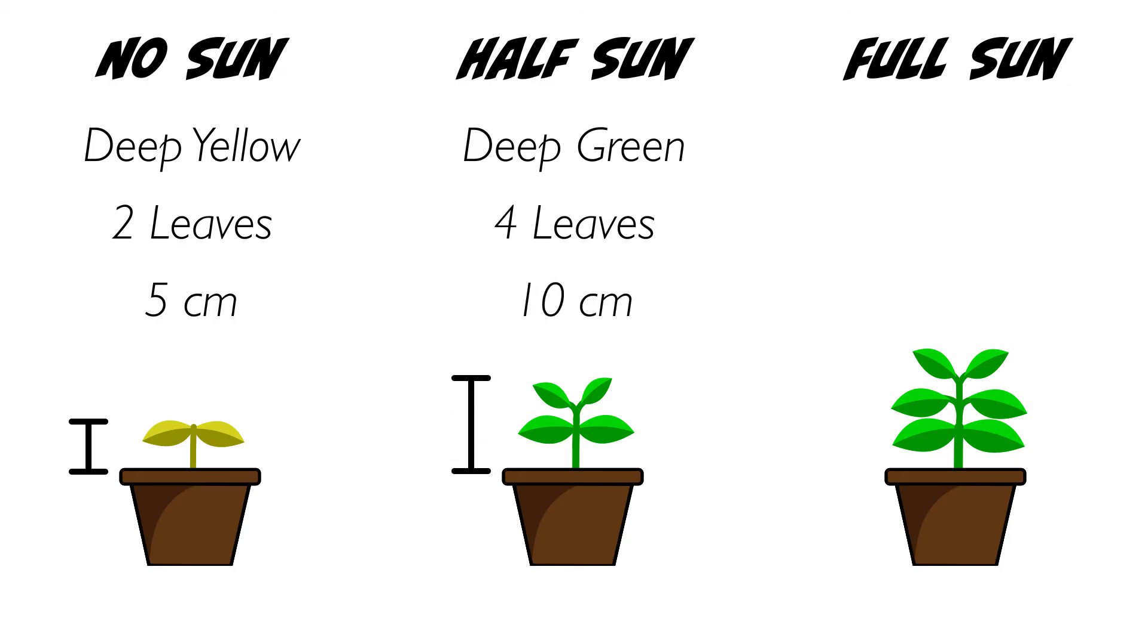In the full-sun case, we observe another plant that is a healthy deep green. This plant has six leaves and is 15 centimeters tall. Now that we've collected our data, it's time to take it and see what we've learned.